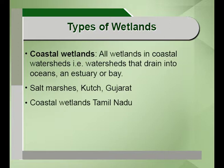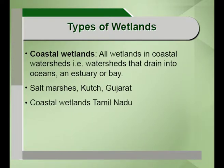Coastal wetlands, as the name indicates, are all wetlands in coastal watersheds that drain into an estuary or a bay. India has a very long coastal belt of around 7,500 kilometers. Along it we find the Sundarbans of West Bengal, the Andaman and Nicobar Islands, coral reefs in the Lakshadweep and Andaman and Nicobar Islands, the salt marshes of the Kutch in Gujarat, coastal wetlands in Tamil Nadu and the Kalivelu wetlands in Andhra Pradesh.